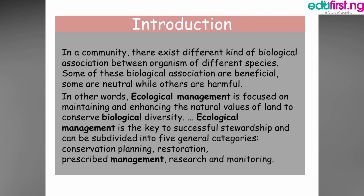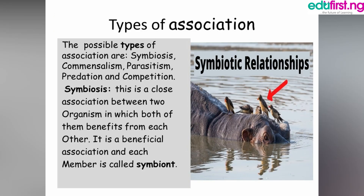What we are trying to explain here is whether a species can adapt based on conservation, based on the movement of temperature or humidity, or vice versa. The possible types of associations are: symbiosis, commensalism, parasitism, predators, and competitors.